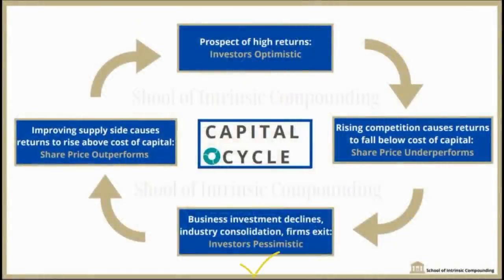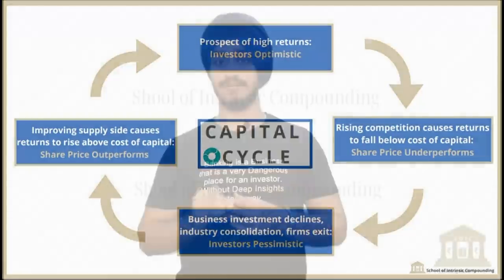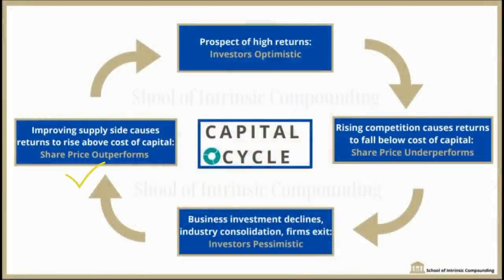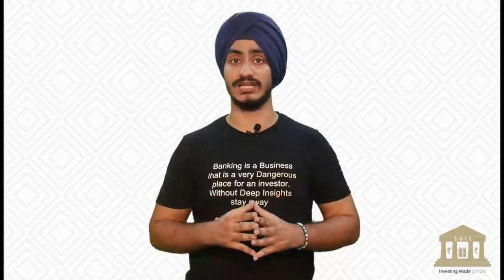Eventually, when we are in the second stage, we go to the third stage. In the third stage, because there are so many players, return on capital employed falls below the cost of capital. Inefficient players will go bust and quit the market. That leads to the fourth stage — consolidation of existing players. Because the market is consolidated, the profit pool belongs to only 3 or 4 people, leading to higher returns on invested capital. This is how a capital cycle works in a business.